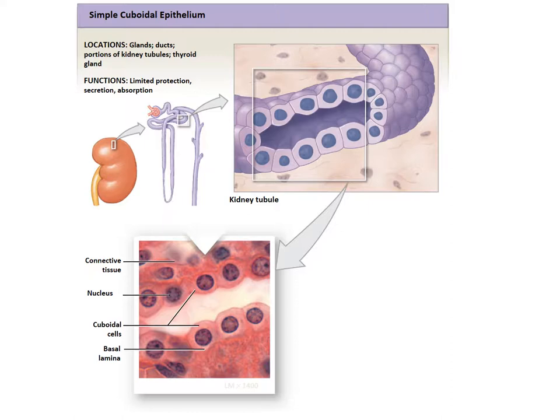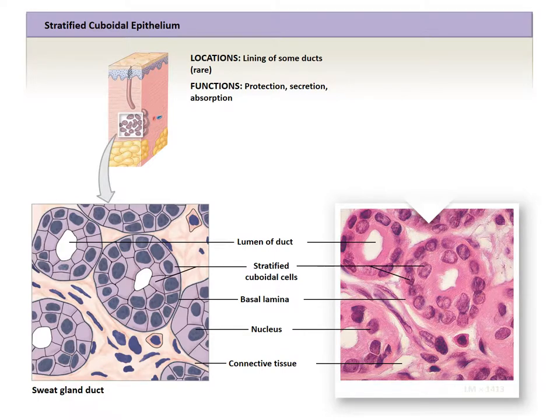Looking at cuboidal cells, they primarily deal with secretion and absorption. Simple cuboidal cells are found throughout various glands like thyroid and salivary glands, as well as the ducts of the pancreas and kidney tubules, and are specialized for absorption and secretion. Here we can see simple cuboidal cells inside the nephron tubes of the kidney. Next is stratified cuboidal — the rarest of all epithelial tissue — found in sweat glands and mammary glands. It is specialized for secretion, typically surrounding the lumen of a duct to release into it, producing compounds seen in exocrine function.